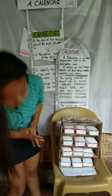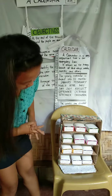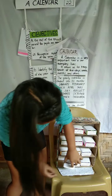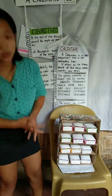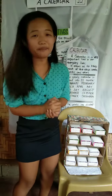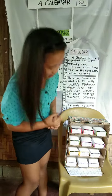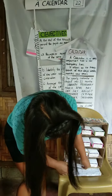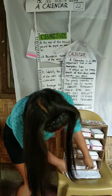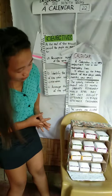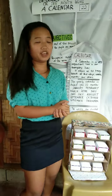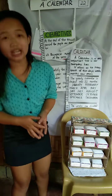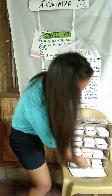Ano ang kasunod ng August? The September. Ano ang kasunod ng September? The October. The 11th one, ang kasunod ng ating October is November. And the last one is December.